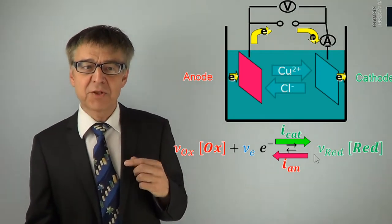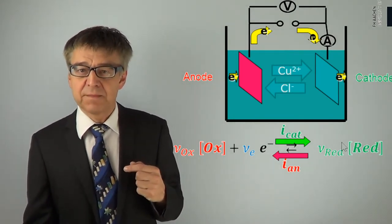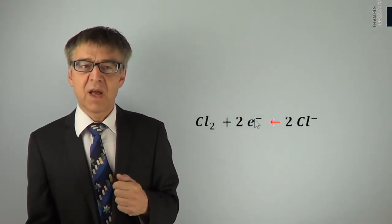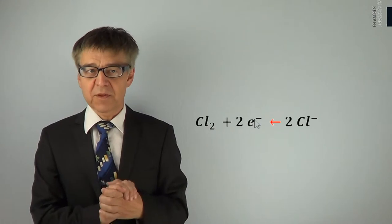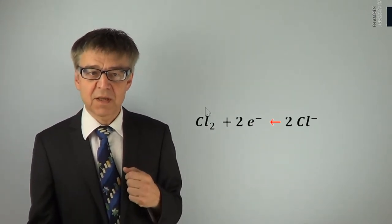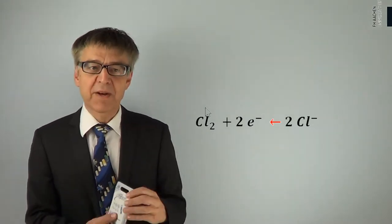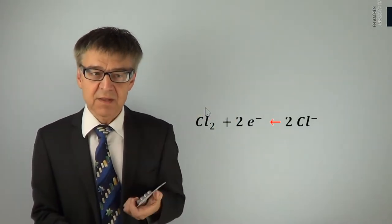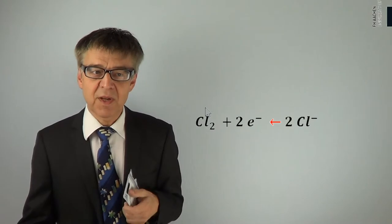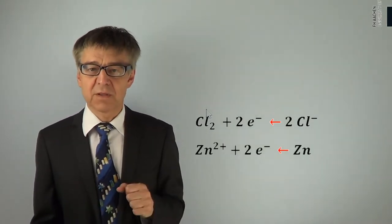Usually, the transfer reaction is written with the electrons on the left-hand side. In electrolysis of copper chloride, chlorine is produced at the positive terminal, so the following oxidation reaction takes place. In zinc-carbon batteries, zinc – the negative terminal – dissolves in this oxidation reaction.